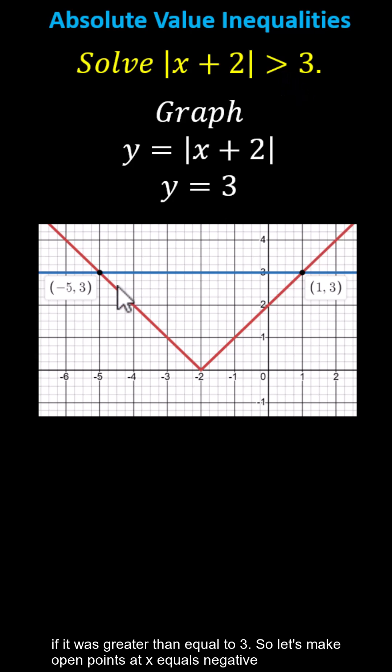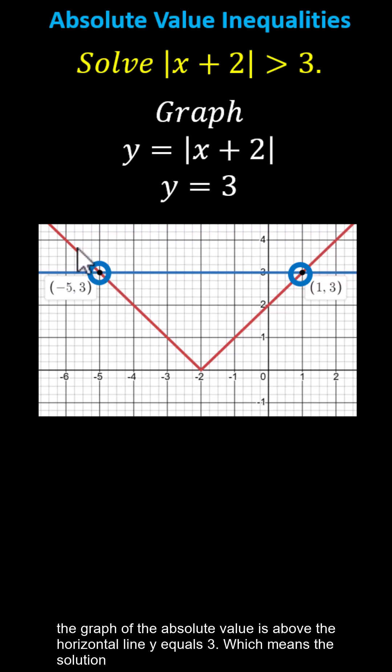So let's make open points at x equals negative 5 and x equals 1. And then notice to the right of x equals 1 and the left of x equals negative 5, the graph of the absolute value is above the horizontal line y equals 3.